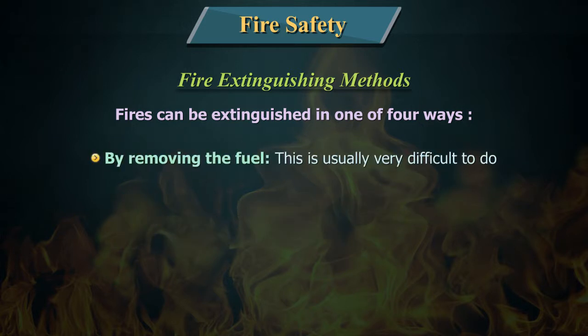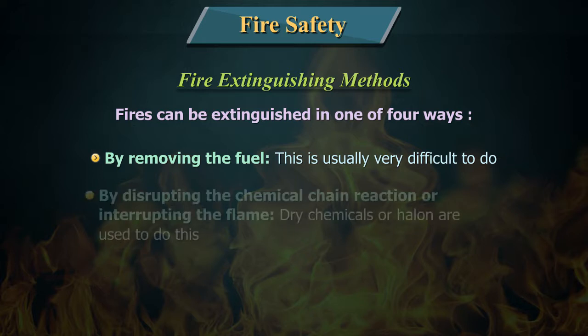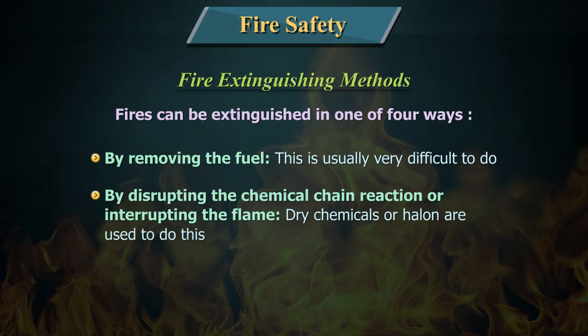By removing the fuel — this is usually very difficult to do. An example is turning off a fuel line. By disrupting the chemical chain reaction or interrupting the flame: dry chemicals or halon are used to do this.